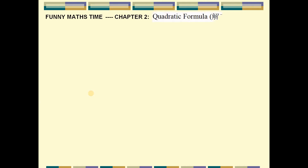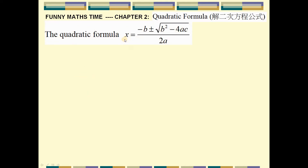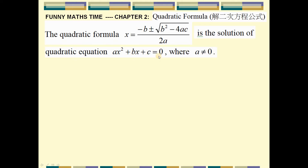First we state the statement of the quadratic formula. The quadratic formula is x equal to minus b plus and minus square root of b squared minus 4ac, over 2a. It's the solution of the quadratic equation ax squared plus bx plus c equal to zero.